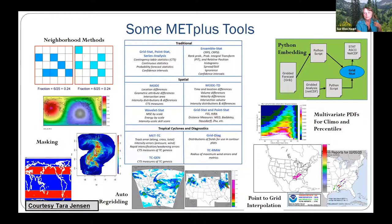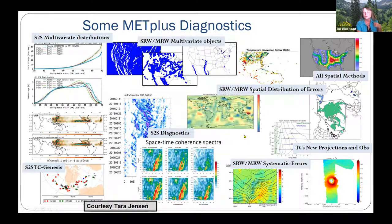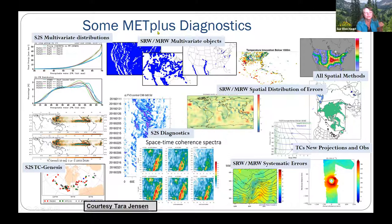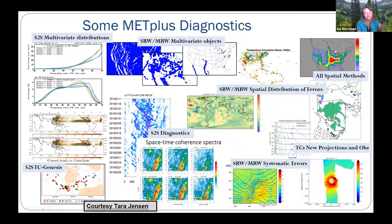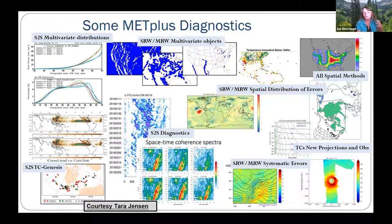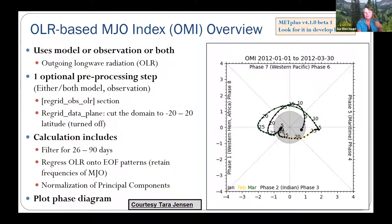Some of their diagnostics are generally useful. They're bringing out now S2S multivariate distributions, multivariate objects, spatial distribution of errors, space-time coherence, step spectra, looking at systematic errors using EOF analysis — all as part of these tools, again very easy to apply and merge your own Python code with the downloadable open-source MET+. I'm going to highlight two basic examples, one related to MJO.